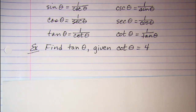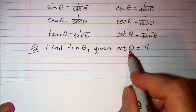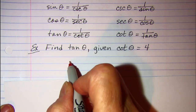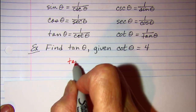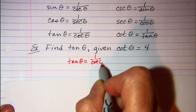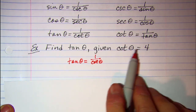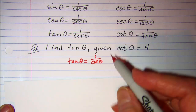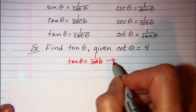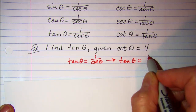Our first example: we're asked to find the tangent of theta given that cotangent theta is equal to 4. Well, if cotangent theta is equal to 4, we know that tangent theta is equal to 1 over cotangent theta. We can substitute 4 in for cotangent theta, so tangent theta is equal to 1 over 4.